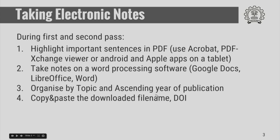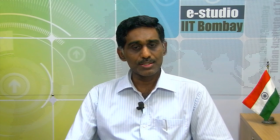Once you have done these topics, all you need to do is go back to this PDF and copy and paste the name of the file that you have downloaded. It is very important to also include the DOI number. The DOI number stands for Document Object Identifier and it uniquely identifies a particular document on the web. It is useful to keep this DOI number and the name of the file. Then you copy and paste the highlighted sentences from the PDF file under the bibliographic information for each topic.